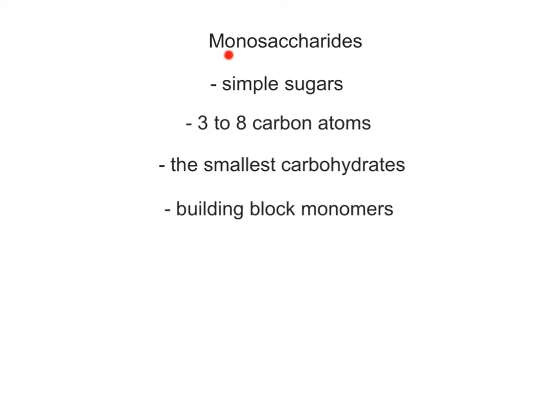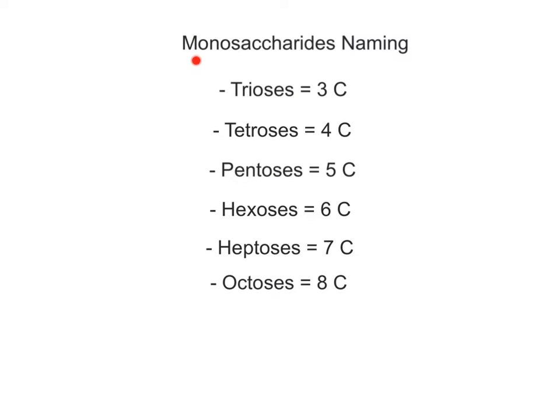Monosaccharides, meaning one sugar, are simple sugars that contain three to eight carbon atoms in their chemical structures. They are the smallest of the carbohydrates and are the building block monomers that covalently bond together to form the larger disaccharides and polysaccharides. Monosaccharides are named using a prefix representing the number of carbon atoms and a suffix ending in -ose.